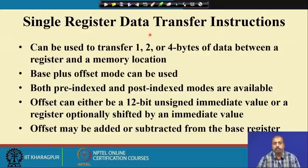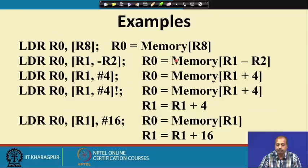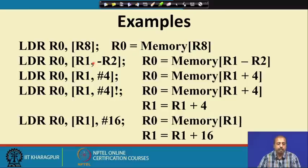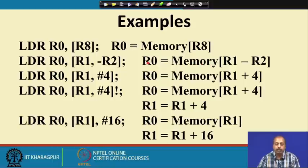Pre-indexed and post-indexed modes are also available. The offset can be a 12-bit unsigned immediate value or a register shifted by another immediate value. For example, LDR R0, [R8] loads register R0 with the content from memory location addressed by R8 — this is indirect addressing. LDR R0, [R1, -R2] uses R1 as base address and -R2 as offset. LDR R0, [R1, #4] loads R0 with the content of memory location R1 + 4.